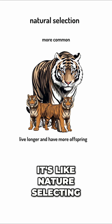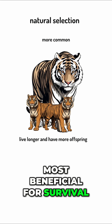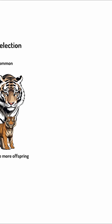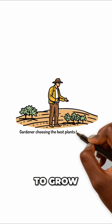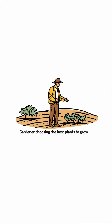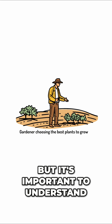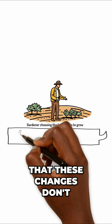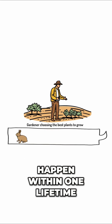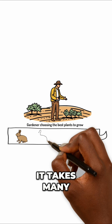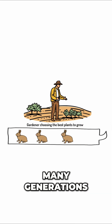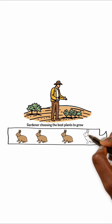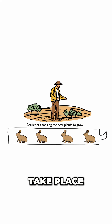It's like nature selecting the characteristics that are most beneficial for survival and reproduction — just like a gardener choosing the best plants to grow. But it's important to understand that these changes don't happen within one lifetime. It takes many, many generations, over many, many years, for natural selection to take place.